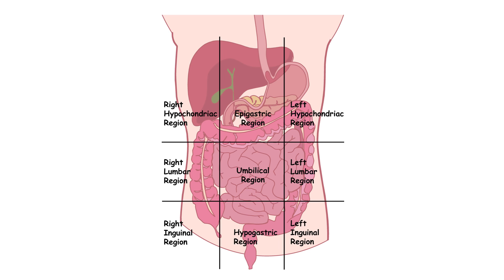Imagine drawing two vertical lines at the midpoints of the clavicles, and two horizontal lines — one at the bottom of the rib cage, called the subcostal line, and one at the top of the hip bones, called the trans-tubercular line. This creates nine regions.